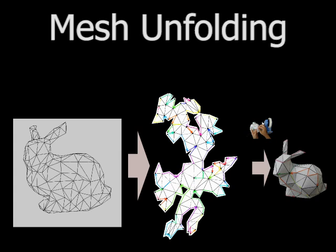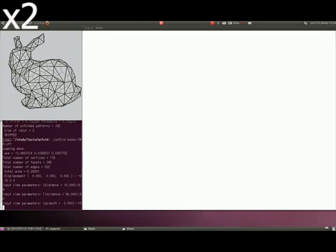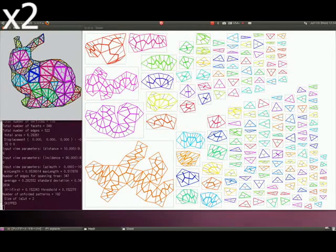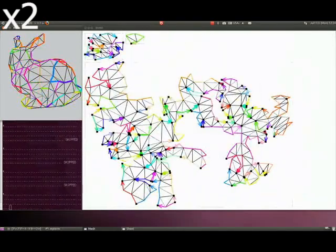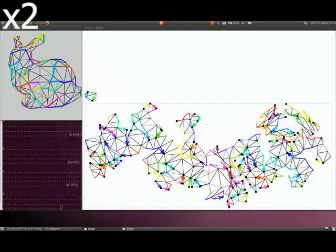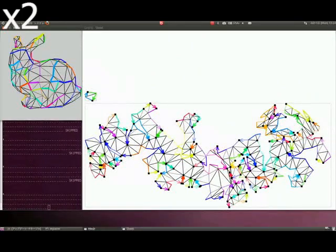Our algorithm for unfolding 3D meshes begins by decomposing the input 3D mesh into a set of small unfolded patches. The unfolded patches are then stitched together to form a single connected component while avoiding undesirable self-overlaps.